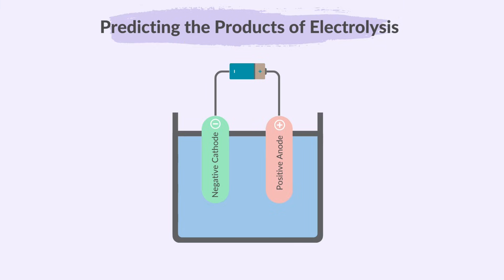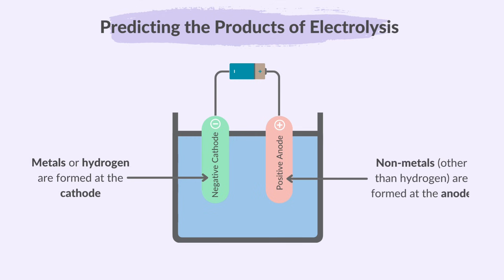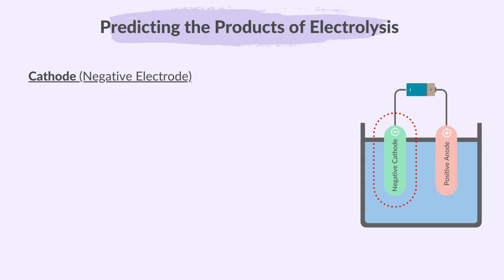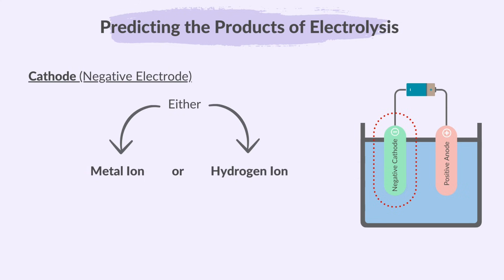In situations involving more than two ions in the electrolyte, how do we predict which ions are discharged and at which electrodes? Metals or hydrogen are formed at the cathode, and non-metals other than hydrogen are formed at the anode. At the cathode, the negative electrode, only one — either the metal ion or the hydrogen ion — will be discharged. To know which one, we must refer to the reactivity series, which is a list of metals arranged in order of their reactivity, and it determines which metal ions get discharged at the cathode.